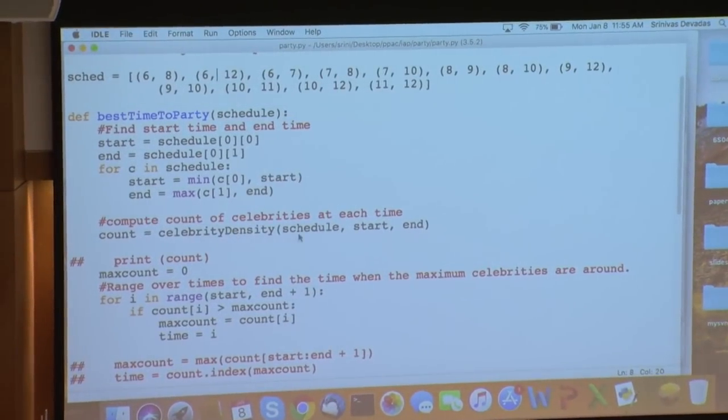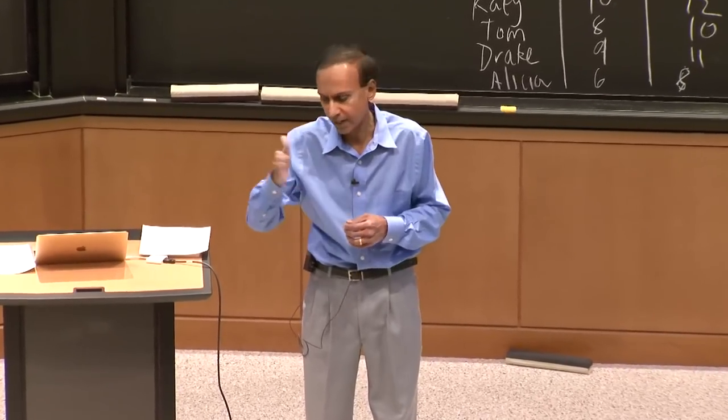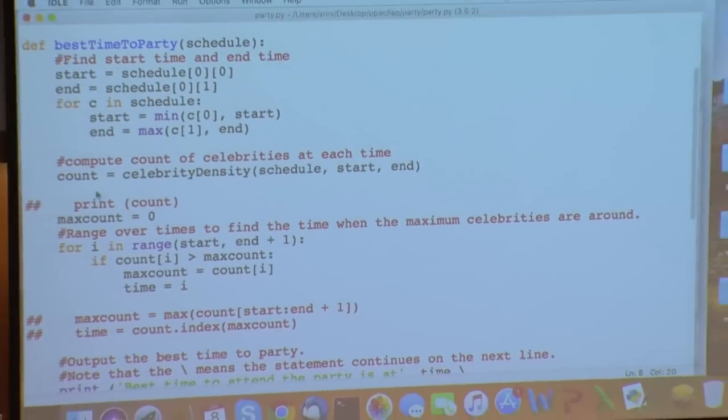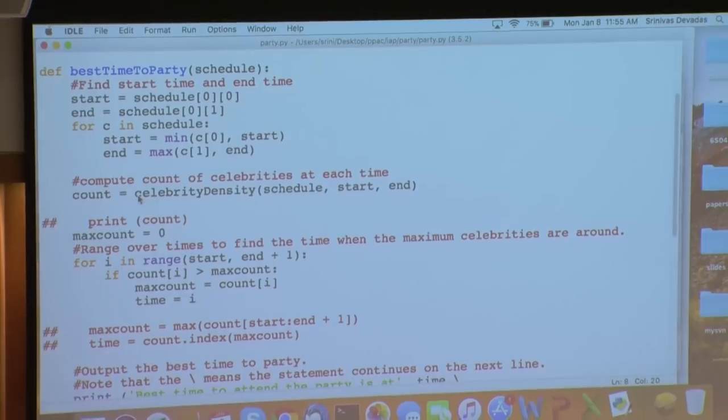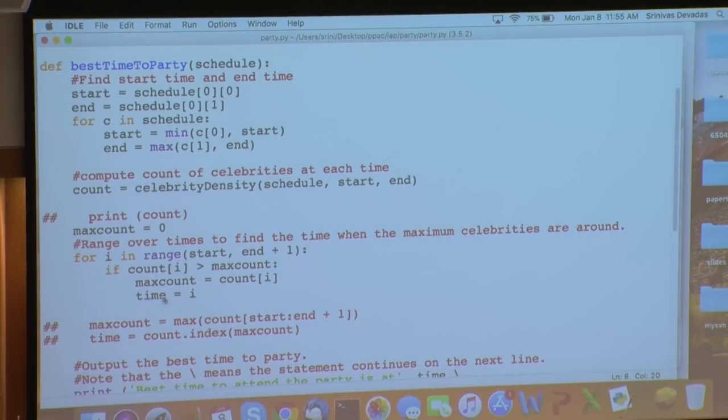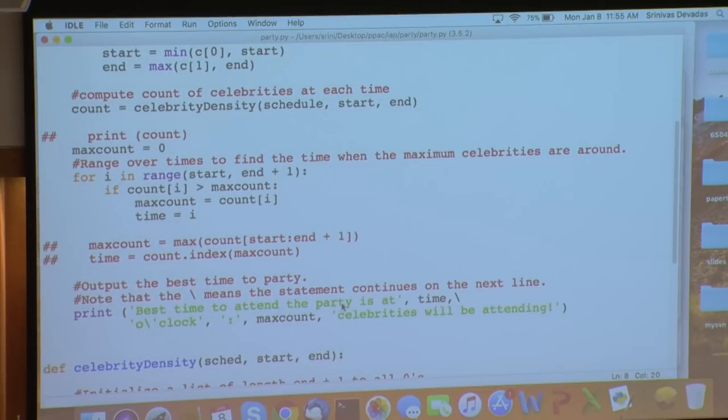I'm going to go ahead and compute what's called the celebrity density. And I'll show you the code for that. But that's essentially what we described, which is for a particular hour between start and end, how many celebrities do I see at that particular hour? And then for the next hour, how many celebrities do I see? I'm just calling it the density. And then the count is a list that is going to have celebrity densities for particular times that correspond to the indices of count. And I'm just going to go through that list. And I'm going to figure out the time that has max count, or the maximum number of celebrities. And there's a couple of different ways of doing that. But I'm happy to answer questions if you have them. And then I just say the best time to attend the party is at this time, which was discovered here. And the number of celebrities who are going to be attending is max count.